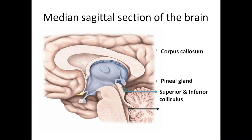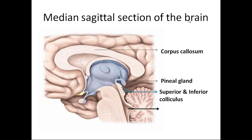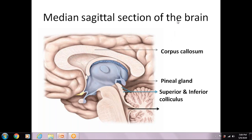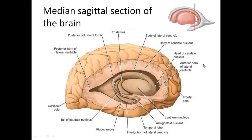The fourth arrowed part is the fourth ventricle — good answer. The fifth arrowed part is the pons — very good.